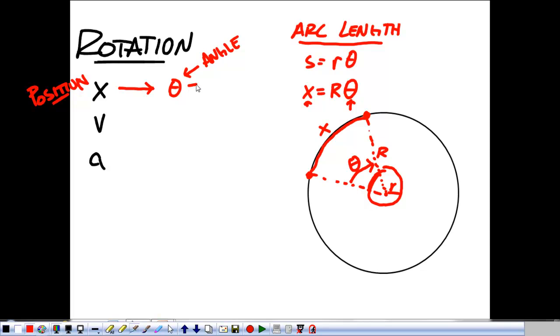The arc length is the position, the angle is the angle theta that we sweep out in radians. So this angle theta is going to be equal to x, our position, divided by a radius. Or another way that we could write it is x equals r theta.